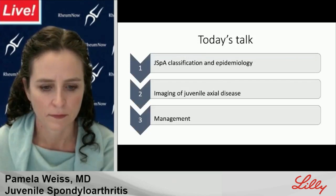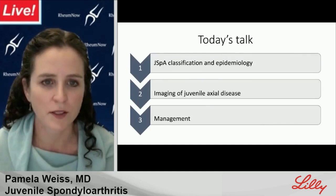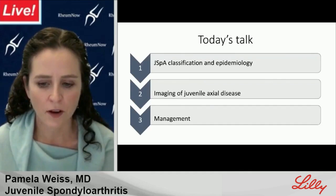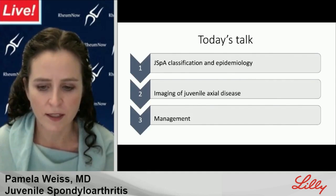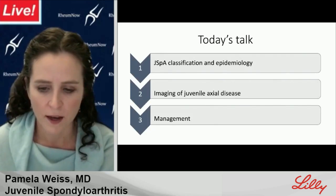For the next few minutes, we're going to demystify the juvenile SPA and JIA classification, review the epidemiology of juvenile onset disease, and then talk about the unique aspects of juvenile onset disease that need to be considered when imaging the axial skeleton in a maturing adolescent, and also management with a focus on how this is a bit different than for adults.